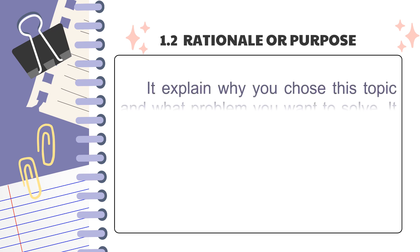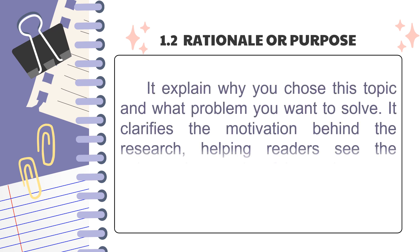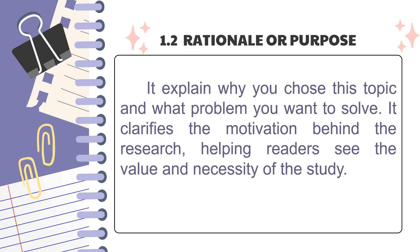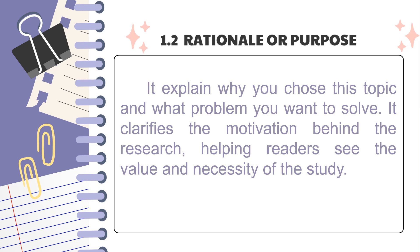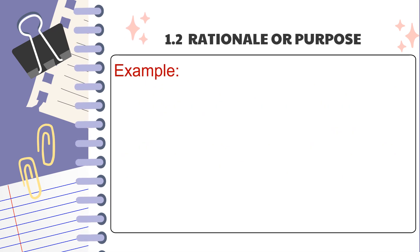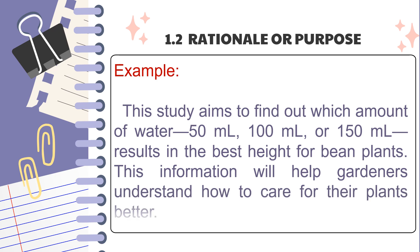Rationale or purpose explains why you chose this topic and what problem you want to solve. It clarifies the motivation behind the research, helping readers see the value and necessity of the study. Example: This study aims to find out which amount of water — 50 milliliters, 100 milliliters, or 150 milliliters — results in the best height for bean plants. This information will help gardeners understand how to care for their plants better. Understanding the rationale helps convey the necessity of the study to the audience.